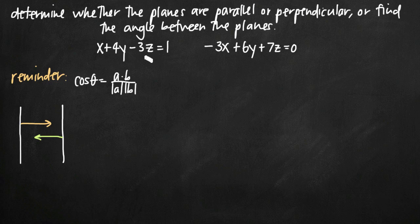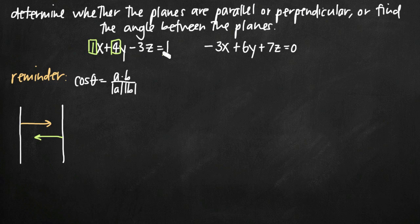I want to find the normal vector of each plane and see whether those are parallel. To find the normal vector, I take the coefficients on each of my x, y, and z terms in each equation. For the first plane, the coefficient on x is 1, I have 4 in front of y, and negative 3 in front of z. So the normal vector to this plane is (1, 4, -3).